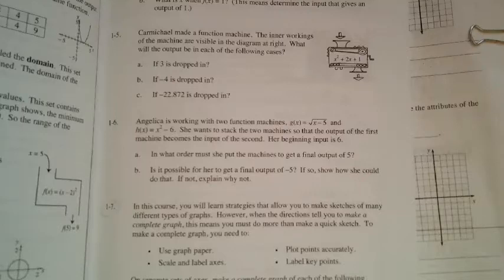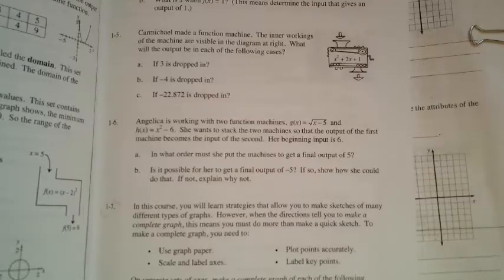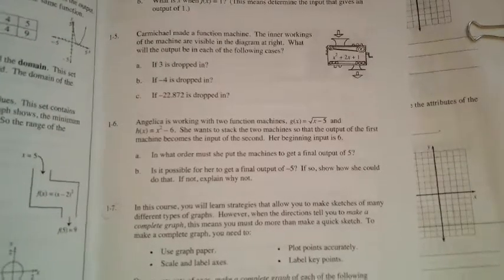She wants to stack the two machines so that the output of the first machine becomes the input of the second. Her beginning input is 6, so letter a is in what order must she put the machines to get a final output of 5. So let's look at that.